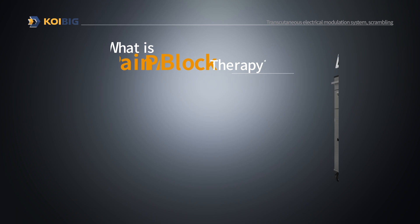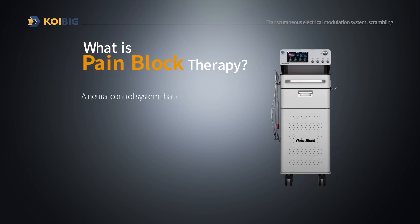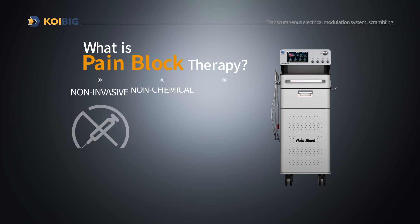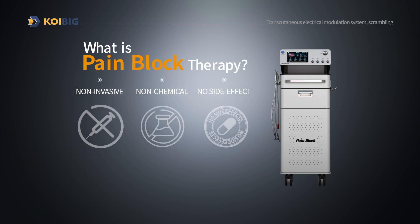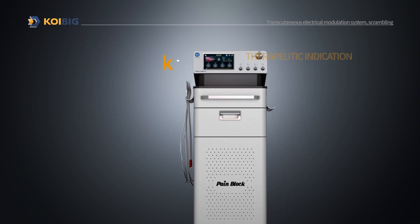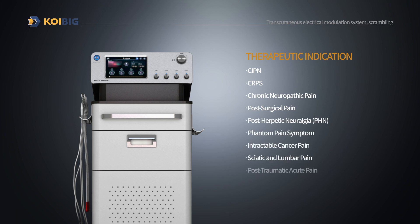PainBlock is a transcutaneous electrical stimulation device for the relief of pain. It uses scrambler therapy to normalize the system of the brain that detects pain by non-invasive neural information control technology. Because the commonality of almost all types of chronic pain is the brain, we are able to successfully treat almost every type of chronic pain.